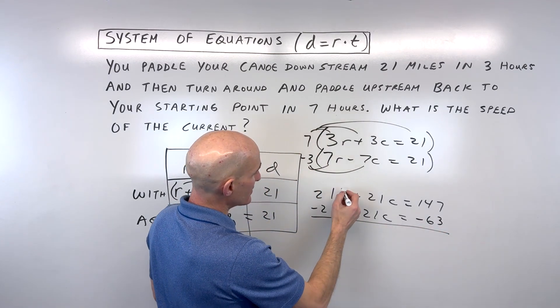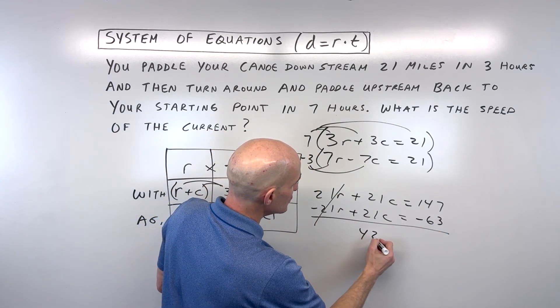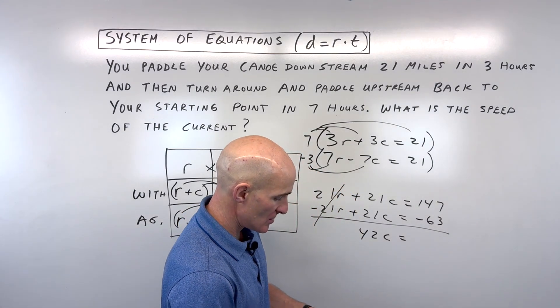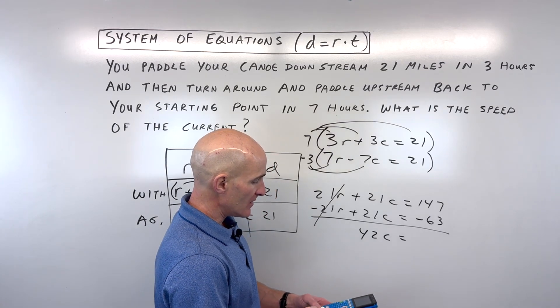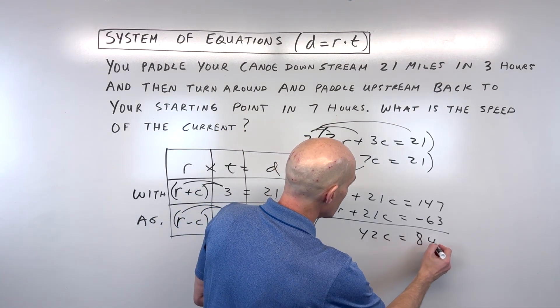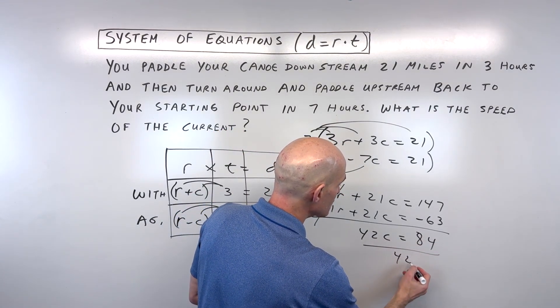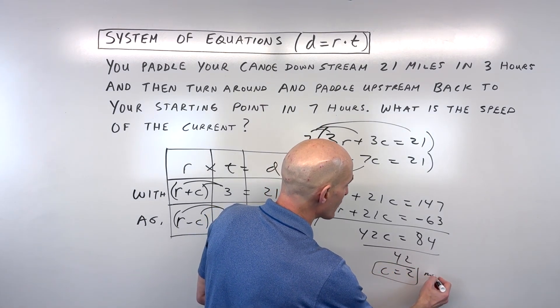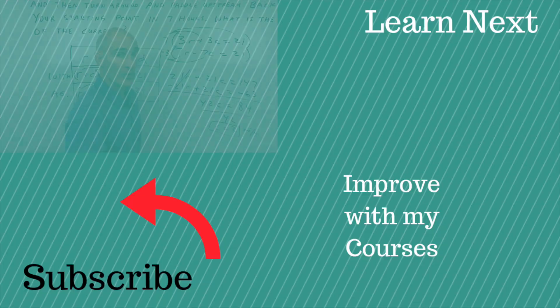So now you can see the R's cancel. We get 42C equals, how much is that? 147 minus 63, it is 84. And if we divide both sides by 42, you can see that C equals 2 miles per hour. So that's the speed of our current.